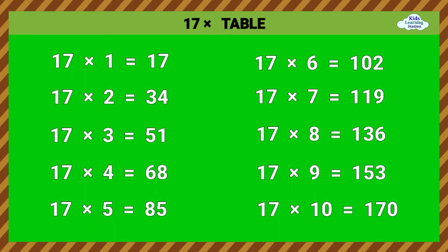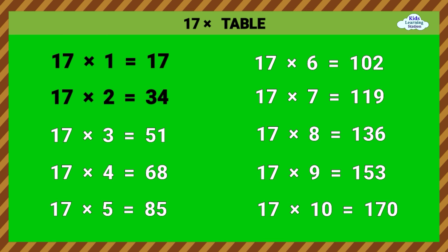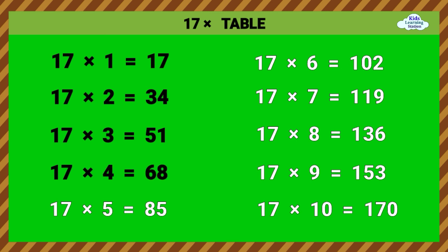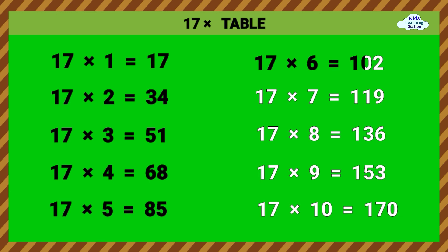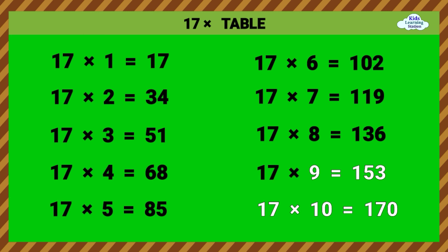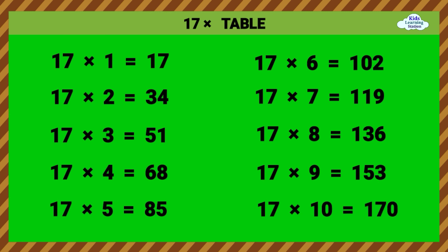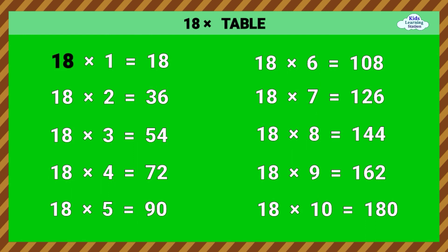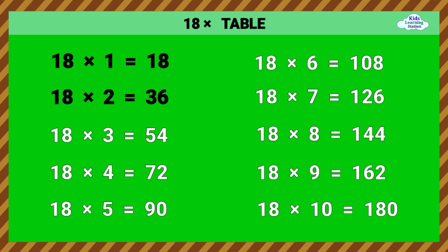Seventeen Times Table. 17 times 1 equals 17. 17 times 2 equals 34. 17 times 3 equals 51. 17 times 4 equals 68. 17 times 5 equals 85. 17 times 6 equals 102. 17 times 7 equals 119. 17 times 8 equals 136. 17 times 9 equals 153. 17 times 10 equals 170.